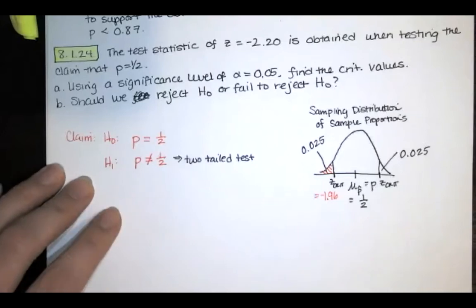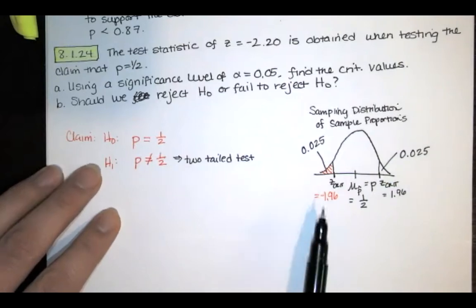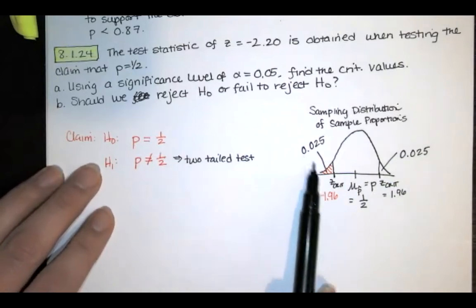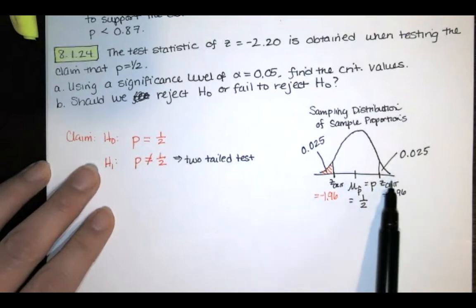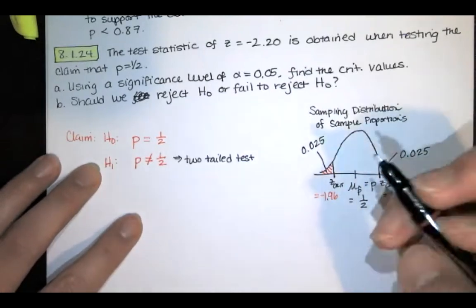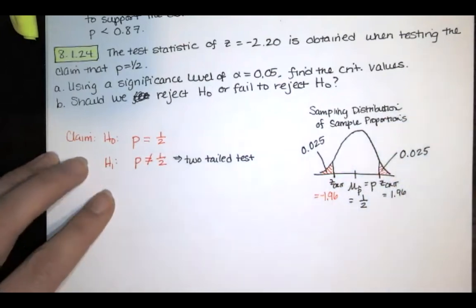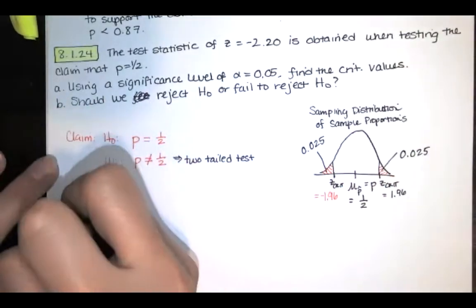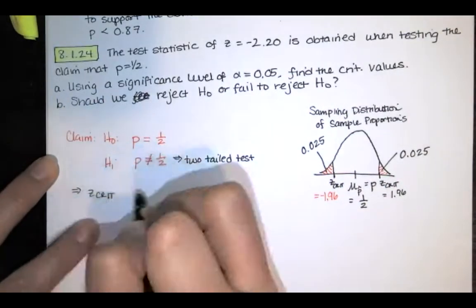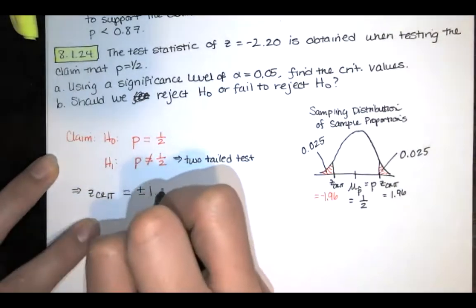Now, because of symmetry, the other z-score is going to be positive 1.96. The z-score that separates this 2.5% of the area at the bottom is negative 1.96. So the z-score that would separate the rest of the area from that 2.5% of the area at the top would be positive 1.96. So the critical values are given by plus and minus 1.96.